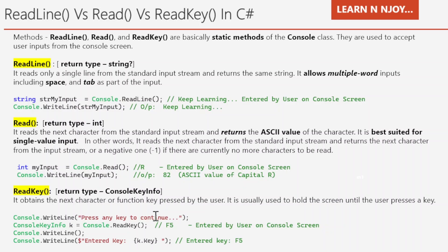Let's suppose the user presses the F5 function key. We capture that key using Console.ReadKey, store it in a variable of type ConsoleKeyInfo, and then print k.Key to get the F5 value. ReadKey is very useful in gaming programs where the user needs to press function keys or type something, and based on that we perform some operation. Another use of ReadKey is that it holds the screen until the user presses a key — for example, after a calculation, Console.ReadKey will hold the screen until any key is pressed.